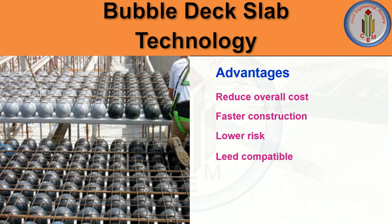The advantages of bubble deck technology: First, it reduces overall cost — it reduces the overall dead weight of the structure and reduces structural concrete cost by 35%. Second, faster construction — it requires no formwork, which increases the speed of construction compared to conventional concrete slab methods. Third, low risk — off-site manufacturing, fewer vehicle trips, simple crane lifts, and a simple installation process all minimize operational risk as well as health and safety risks.